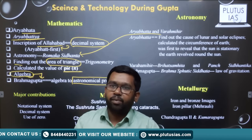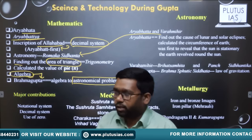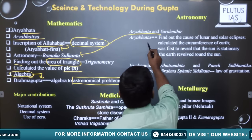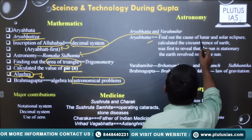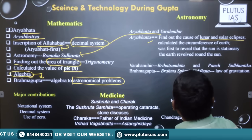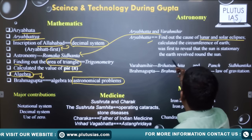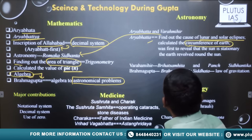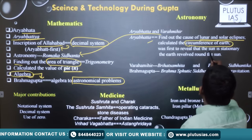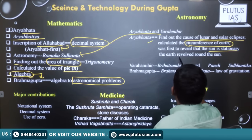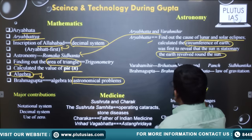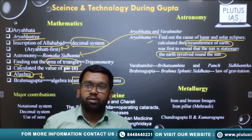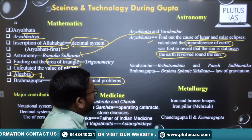Aryabhata belonged to the sixth century AD, in the later Gupta period. Aryabhata and Brahmagupta found out the cause of the lunar and solar eclipse. Aryabhata also calculated certain distances of the earth. He was the first person in the Indian subcontinent to reveal that the sun is stationary and it is the earth that revolves around the sun.